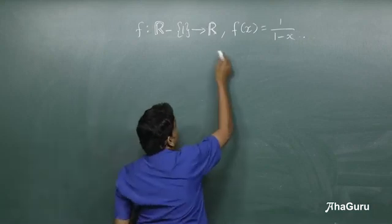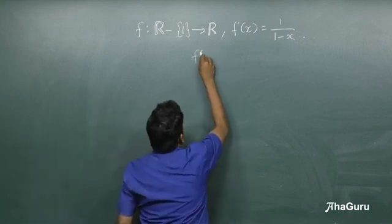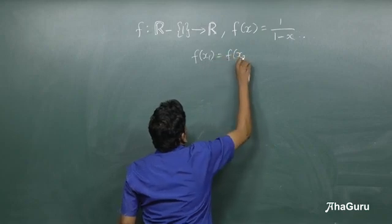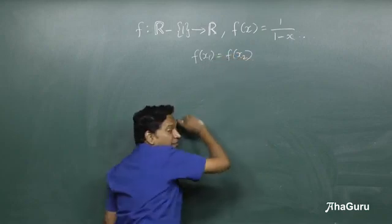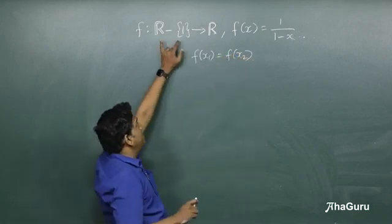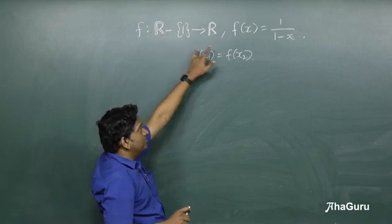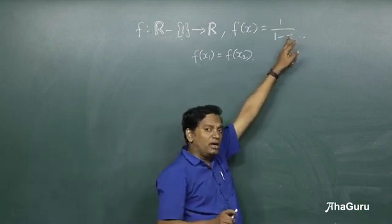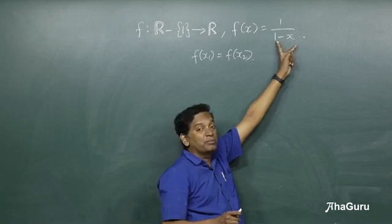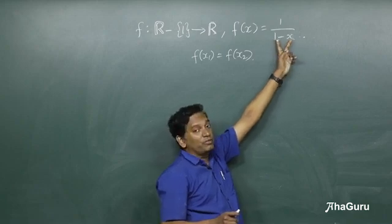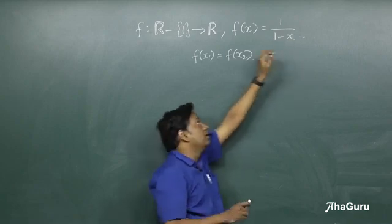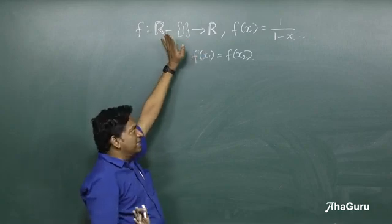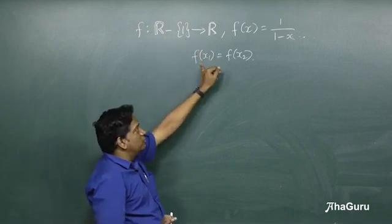Let's first check for 1-1. Before that, let's verify that the domain is valid. Looking at 1/(1-x), all real numbers are applicable except when the denominator becomes 0, which happens when x = 1. So removing 1 from the domain makes sense — everything else is fine, so the domain is valid.